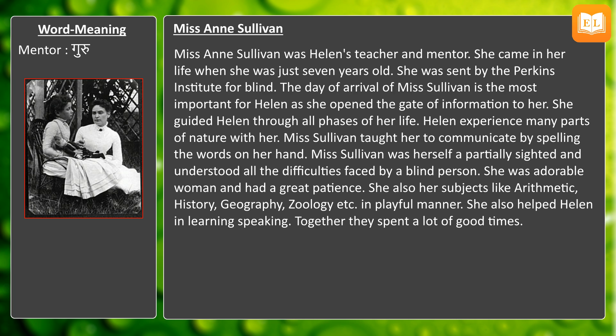Miss Sullivan was Helen's teacher and mentor. She came into her life when Helen was just seven years old. She was sent by the Perkins Institute for the Blind. The day of Miss Sullivan's arrival was the most important for Helen, as she opened the gate of information to her and guided Helen through all phases of her life.